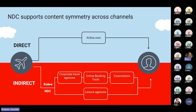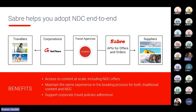For travelers, access to new and more relevant travel options is key. NDC helps carve the way towards personalized retailing experiences. Sabre is well-positioned to help you adopt NDC because we work with each constituent in the travel value chain. We provide access to NDC via our offer-and-order APIs and our agency solution Sabre Red 360, as well as our online booking tool Get There. Working with Sabre to activate NDC capabilities, you can expect benefits like access to content at scale, a consistent booking experience for both traditional and NDC content, and support for corporate travel policy adherence.